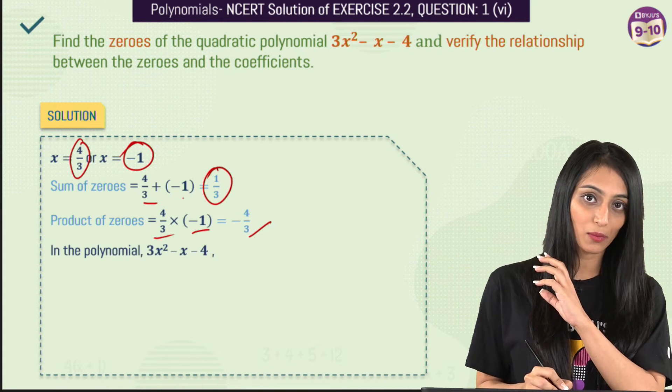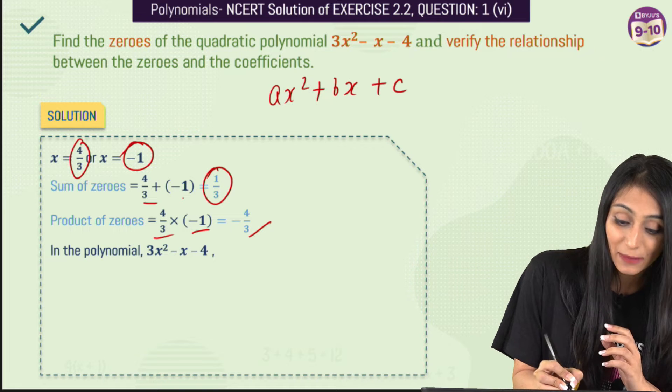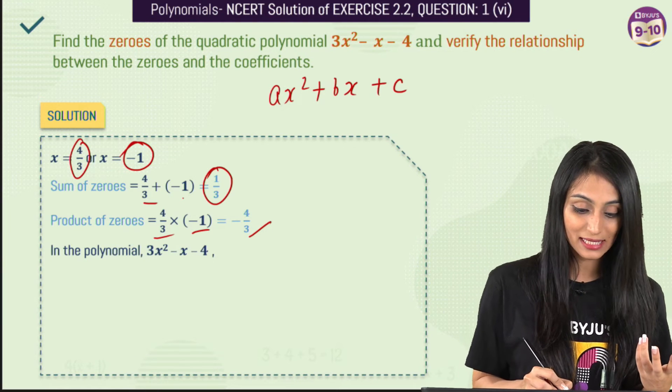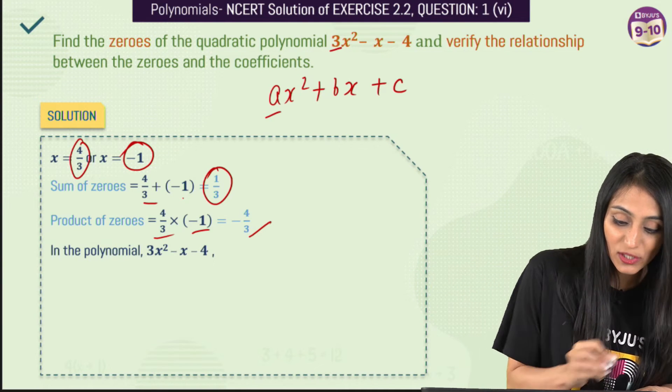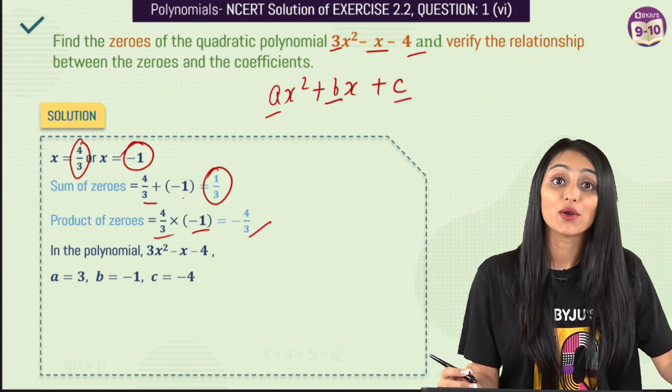Now we know one thing in this quadratic polynomial if I compare it with the general form of a quadratic polynomial that is ax² + bx + c. So from here I can say that a is going to be 3, b is going to be -1 and c would be -4.